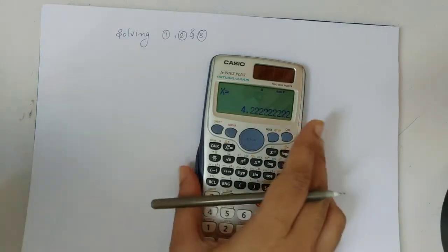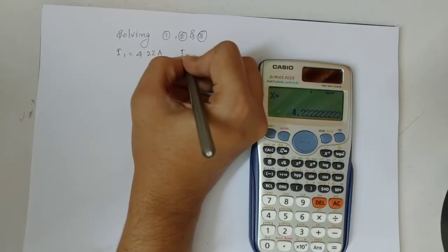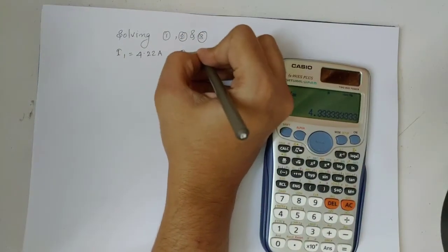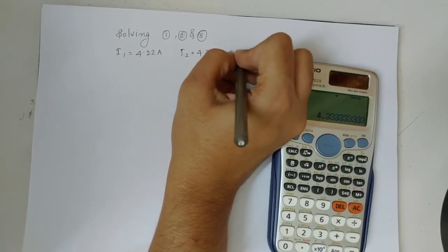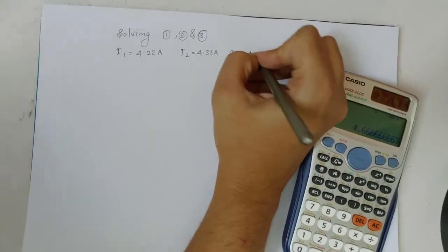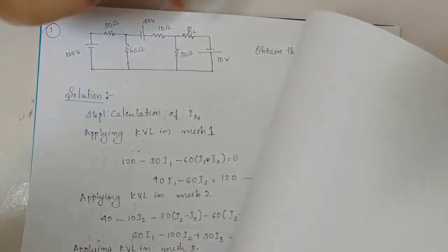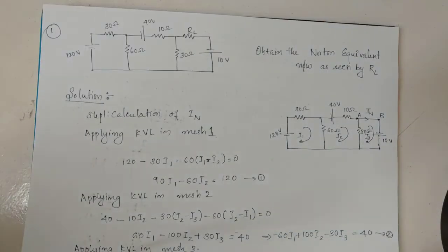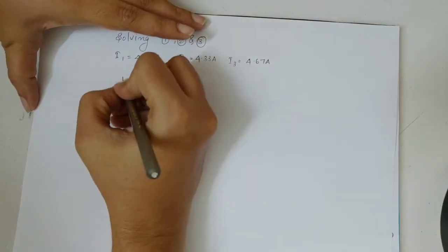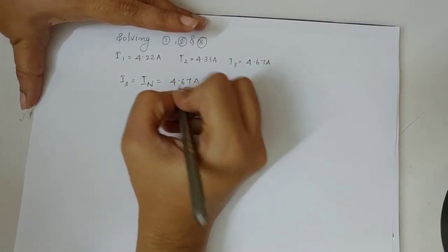Solving the system, we get I1 equals 4.22 amperes, I2 equals 4.33 amperes, and I3 equals 4.67 amperes. Therefore the Norton current IN equals I3 equals 4.67 amperes.